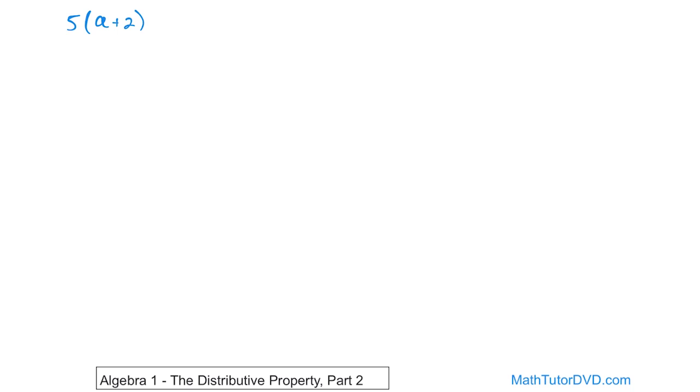So you don't have to have numbers everywhere. You can have variables running around and you do the same thing. You apply the 5 into the a and also into the 2 and they're multiplied. So it'll be 5 times a, which we write as 5a in algebra. And the plus sign comes along for the ride and then we have 5 times 2. And so what we end up having is 5a plus 10.